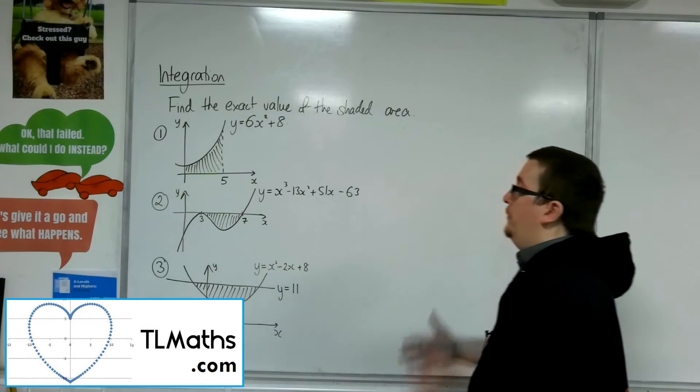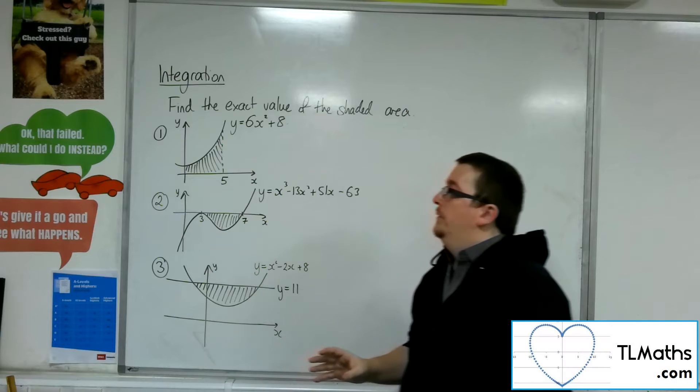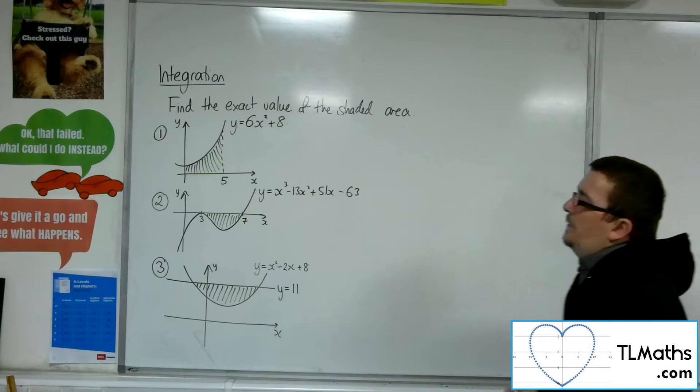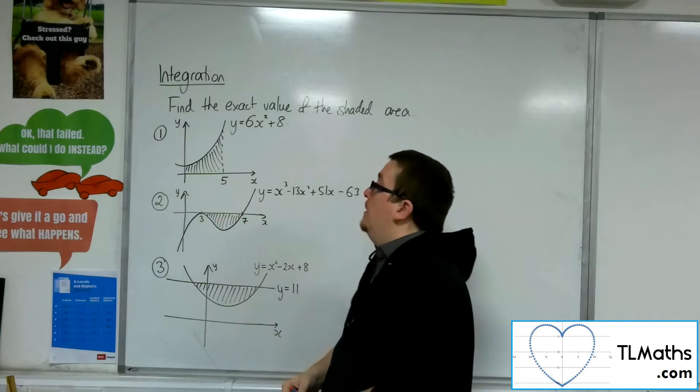Right, in this video, what I want to do is find the exact area of each of these shaded regions. Let's have a look at number 1. We've got y equals 6x squared plus 8, and I need to integrate it between 0 and 5 to find that area.